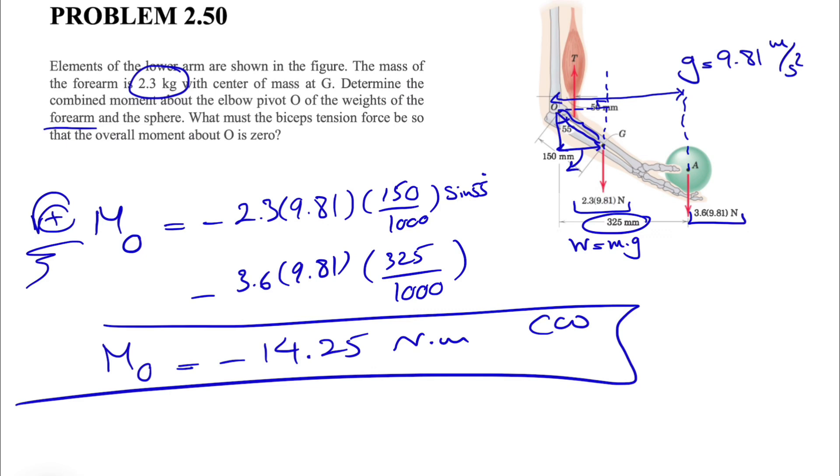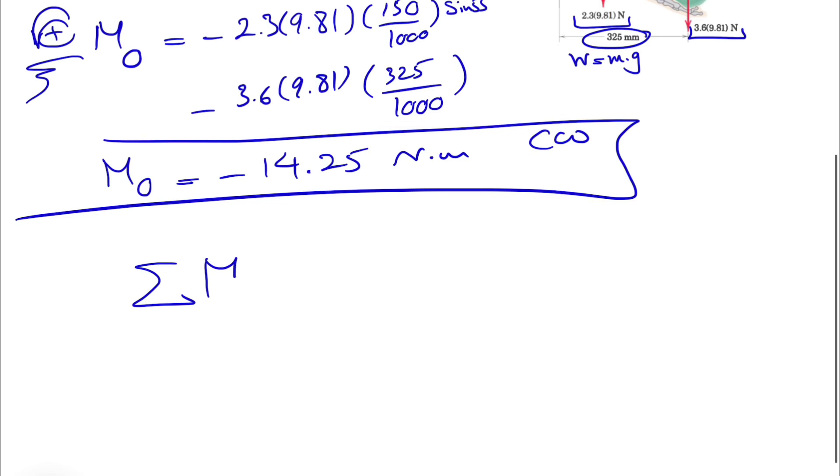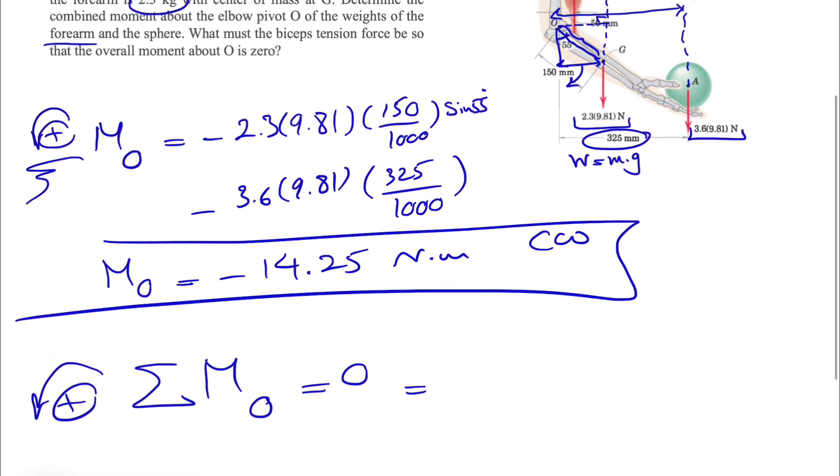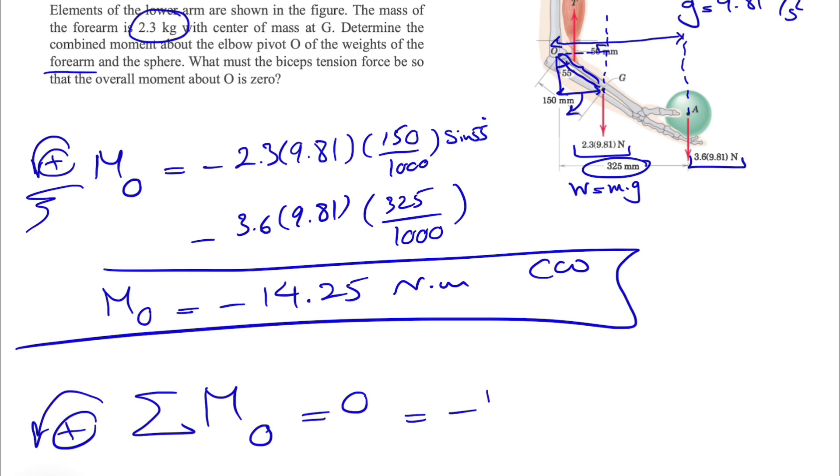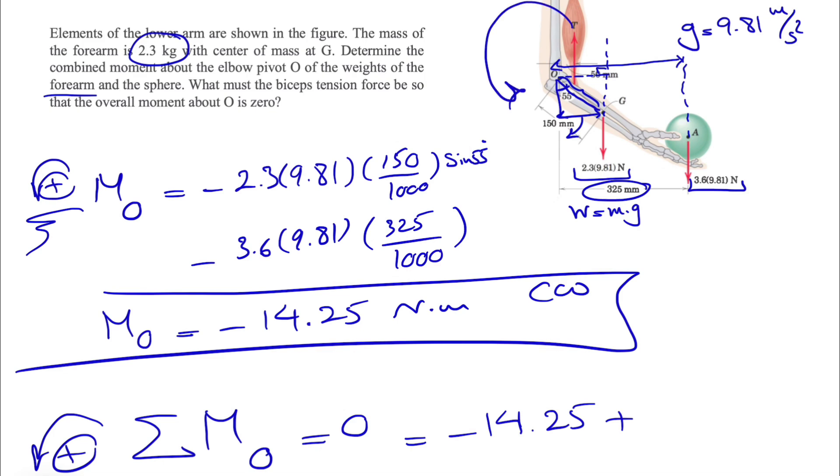Let's move on to the second part where we need to find the tension. Sum of all moments about point O has to be zero. Counterclockwise positive, which is the moment of the forearm and sphere, minus 14.25, plus the moment of the tension in the biceps. That moment is counterclockwise, so we have a positive sign, T times the distance. The vertical distance from the question is 50 millimeters.